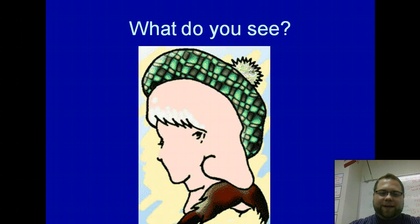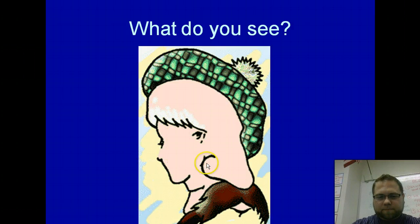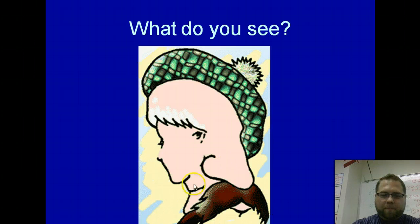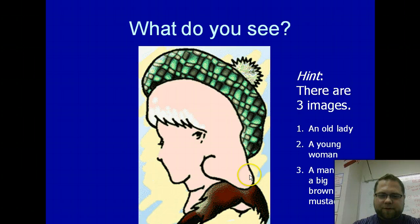What do you see here? There's actually three things that you could see. You could see a young bashful lady. You could see an elderly woman — you've got her chin right here and her eyes. Or you could see a big mustachioed guy rocking a beret. So there are a couple of things that you could see there.